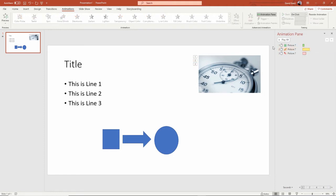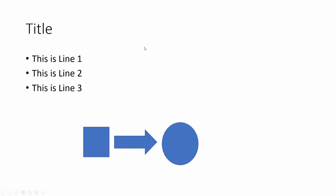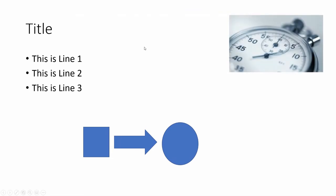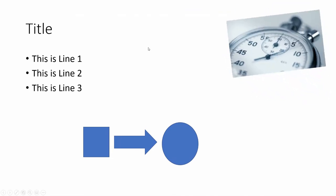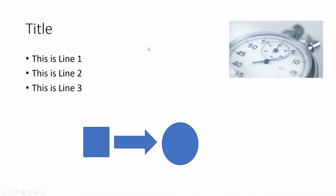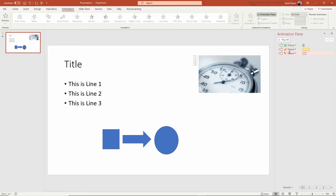So now what will happen is that if I play this: first click I fade in, second click I get the spin emphasis, and the third click it'll fade out. And that's how I can use this.